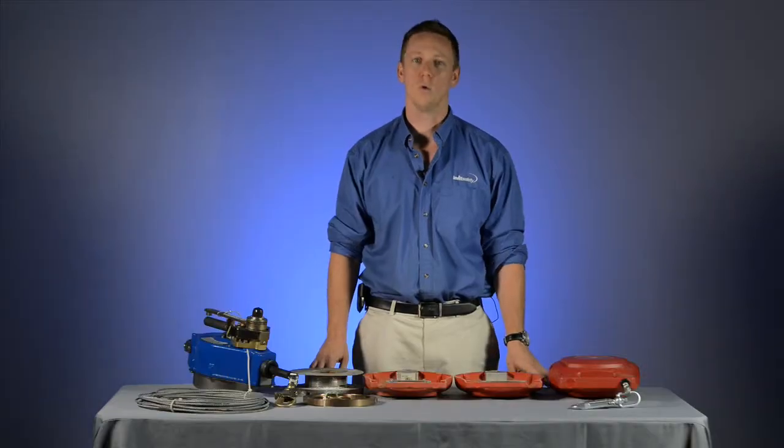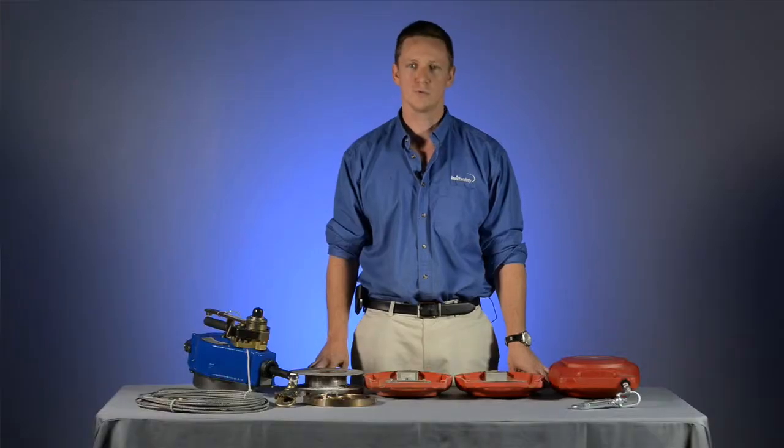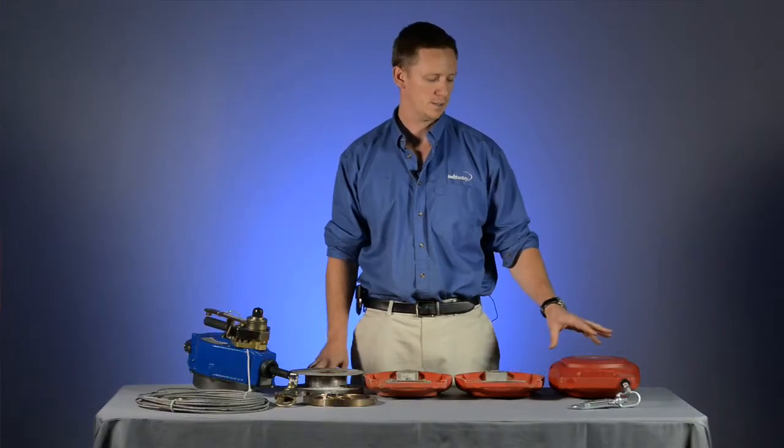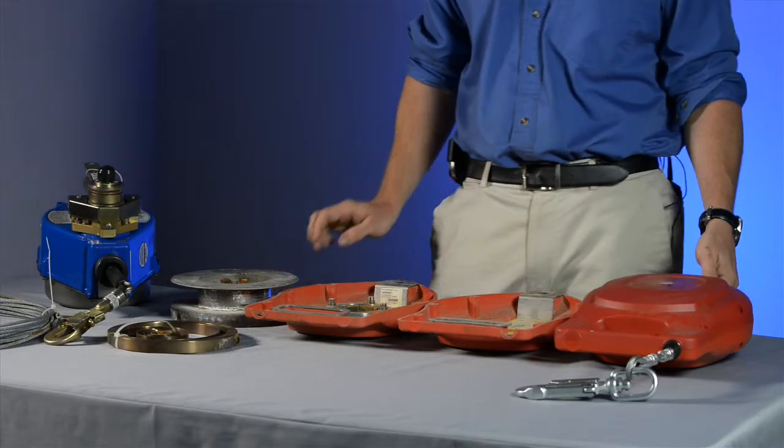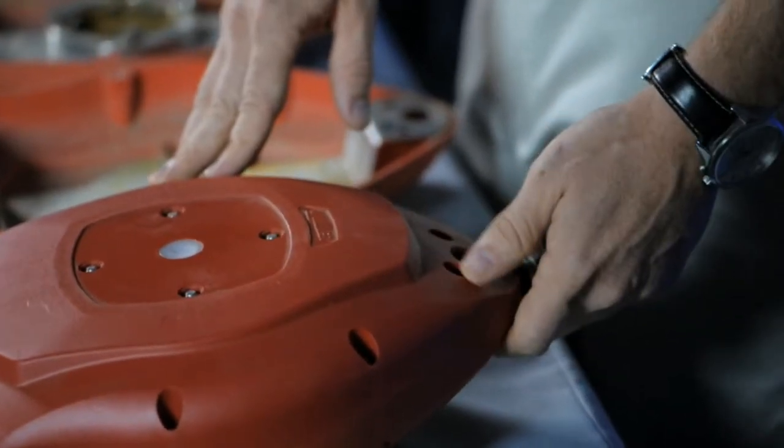I'm just going to briefly go over some of the requirements for self-retracting lifelines. There's two types we're going to talk about here today. The first is the Type 2 self-retracting lifeline, which is any retractable unit that's over 3 meters in length.